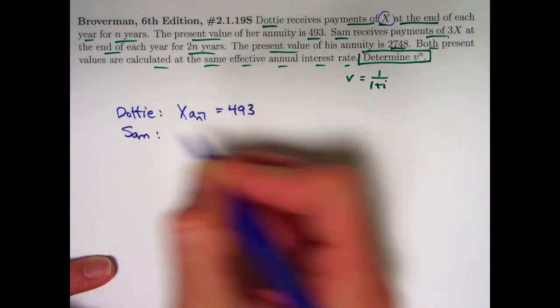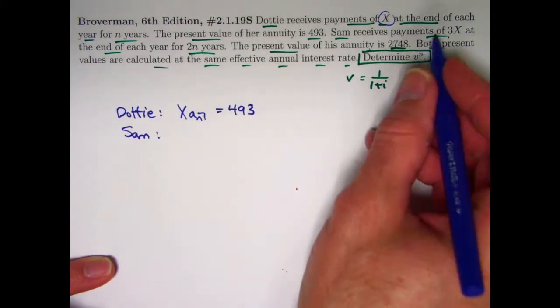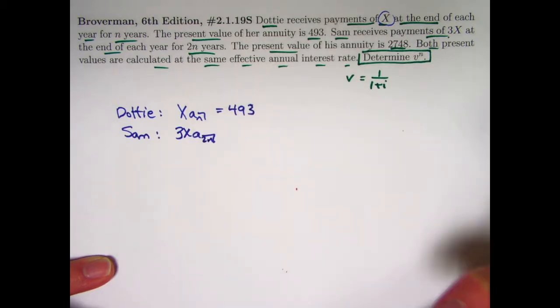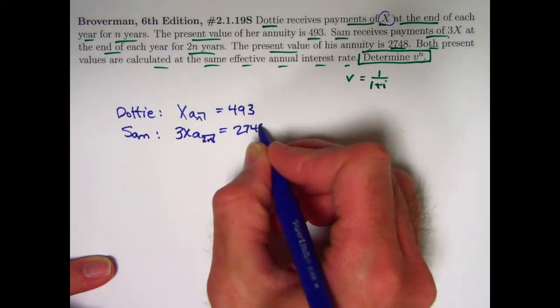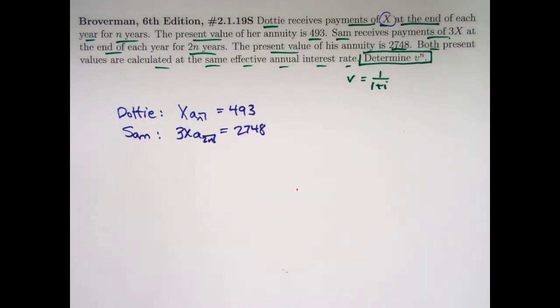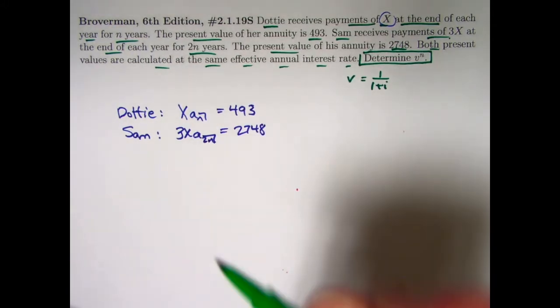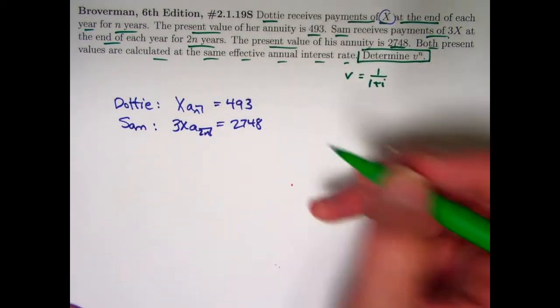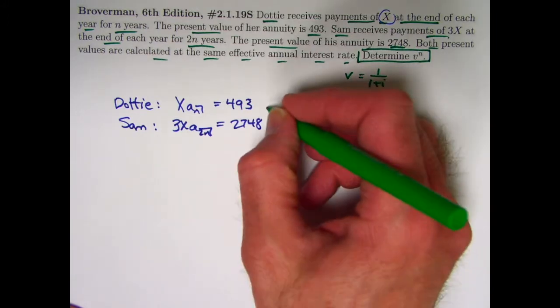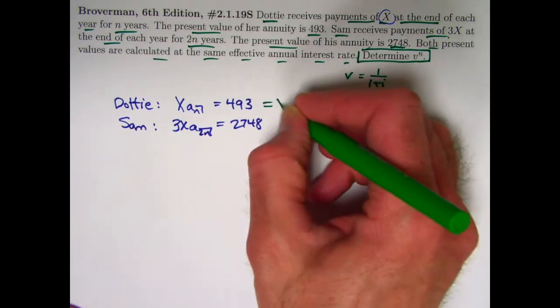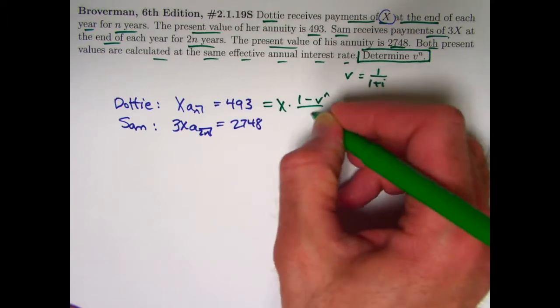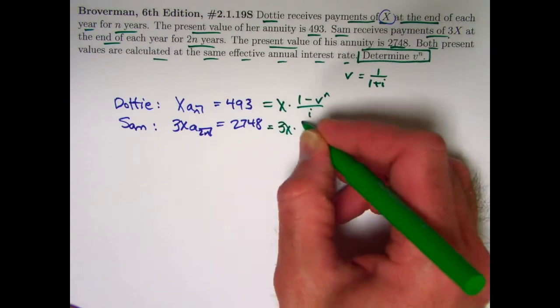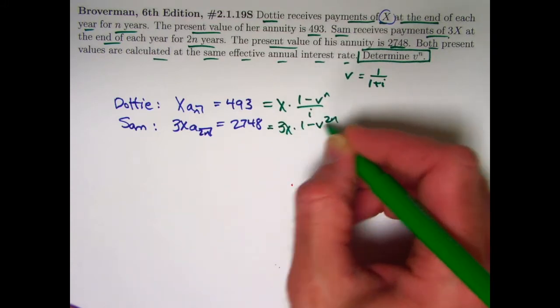And Sam, his present value, he gets payments of 3x that go for 2n years, so you can write that symbolically like this. And that must equal 2748. So first, problem-solving method. Perhaps the most obvious thing to do here is replace a n and a 2n with their formulas involving v to the n. a n equals 1 minus v to the n over i, and a 2n equals 1 minus v to the 2n over i.